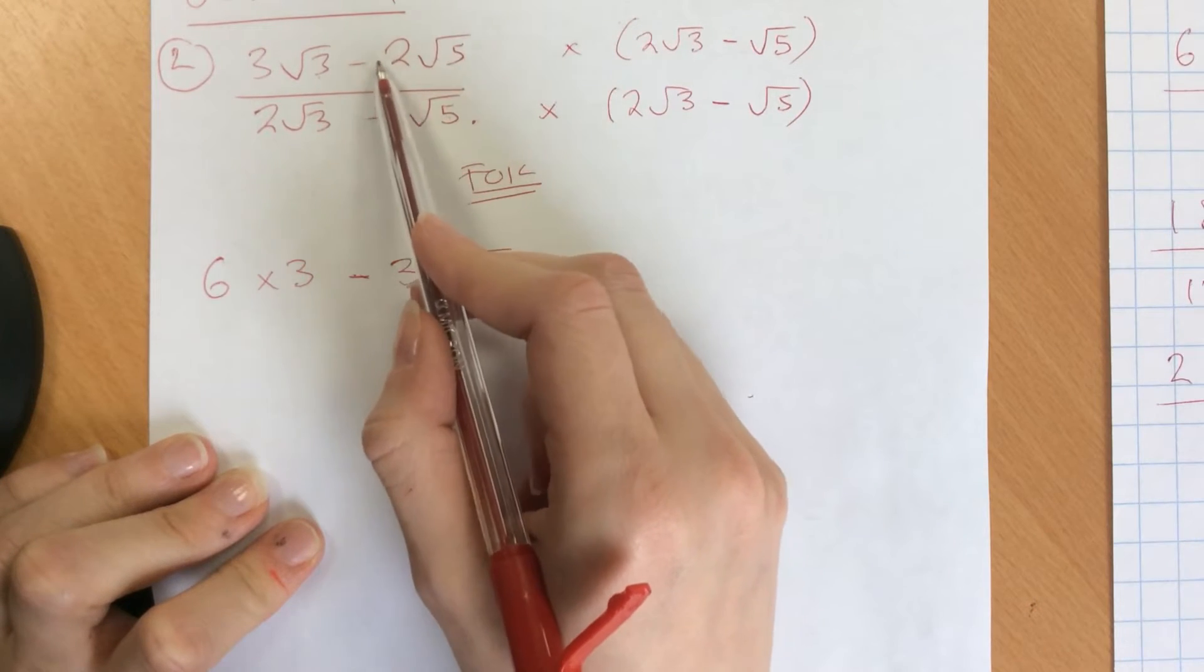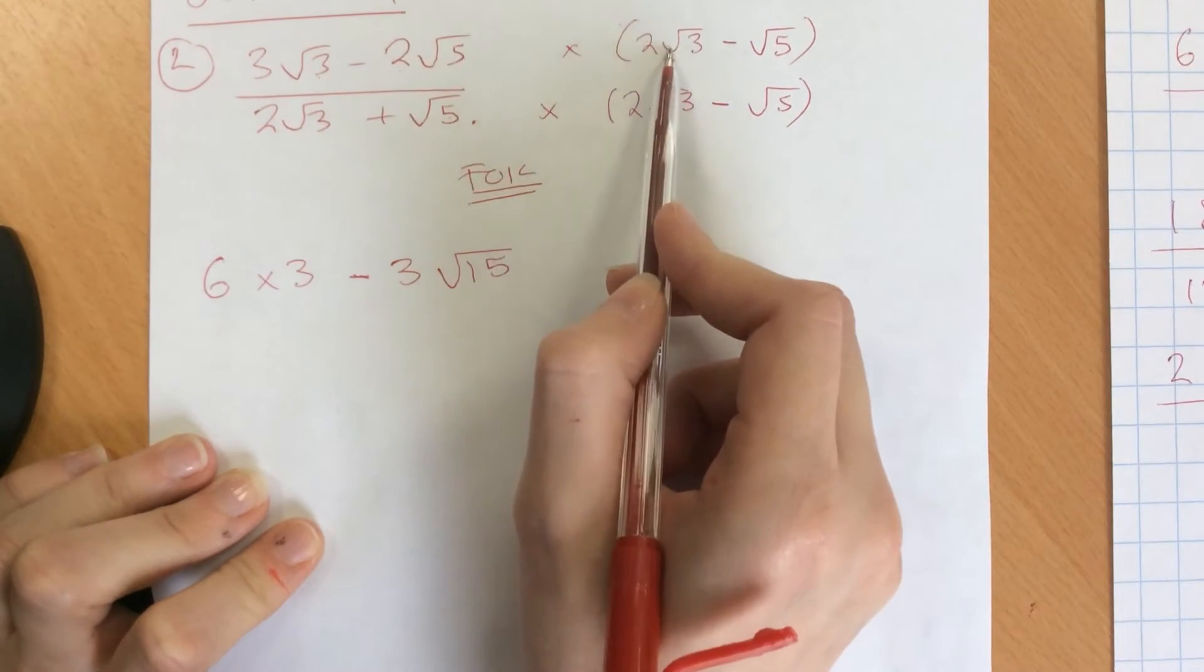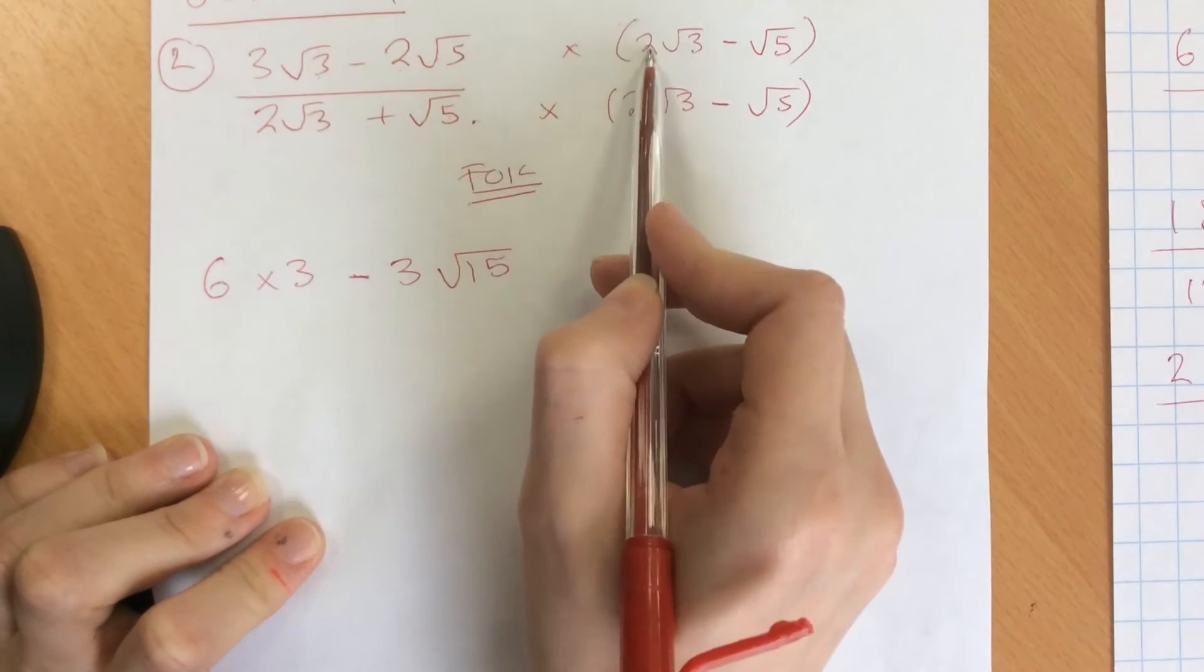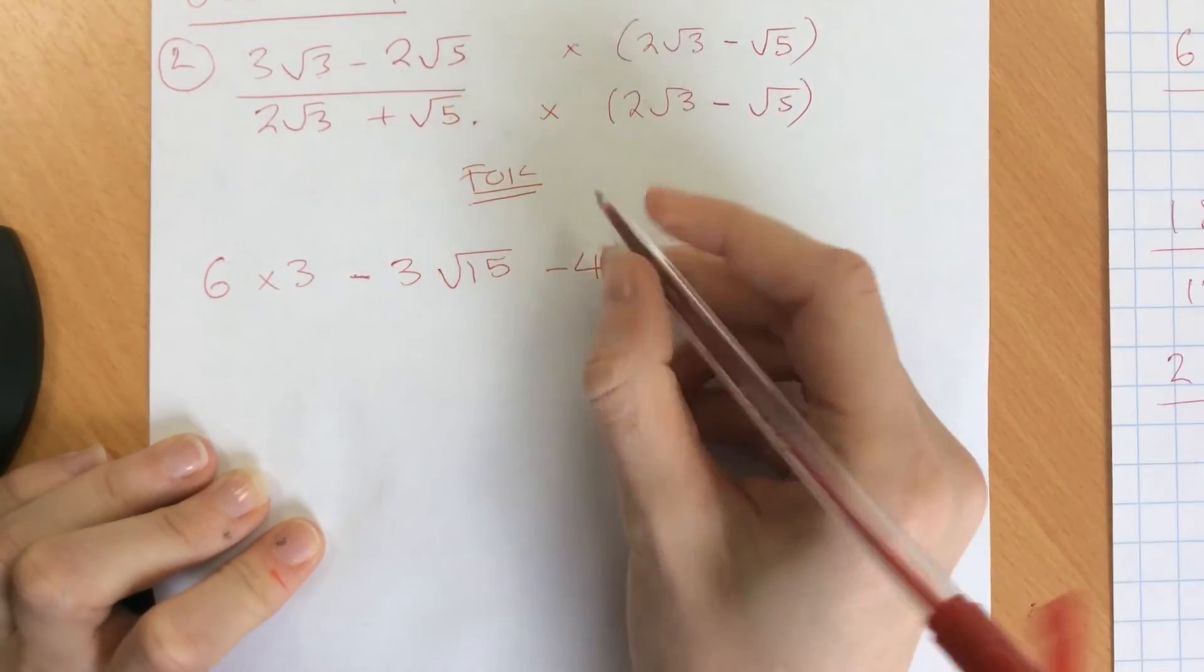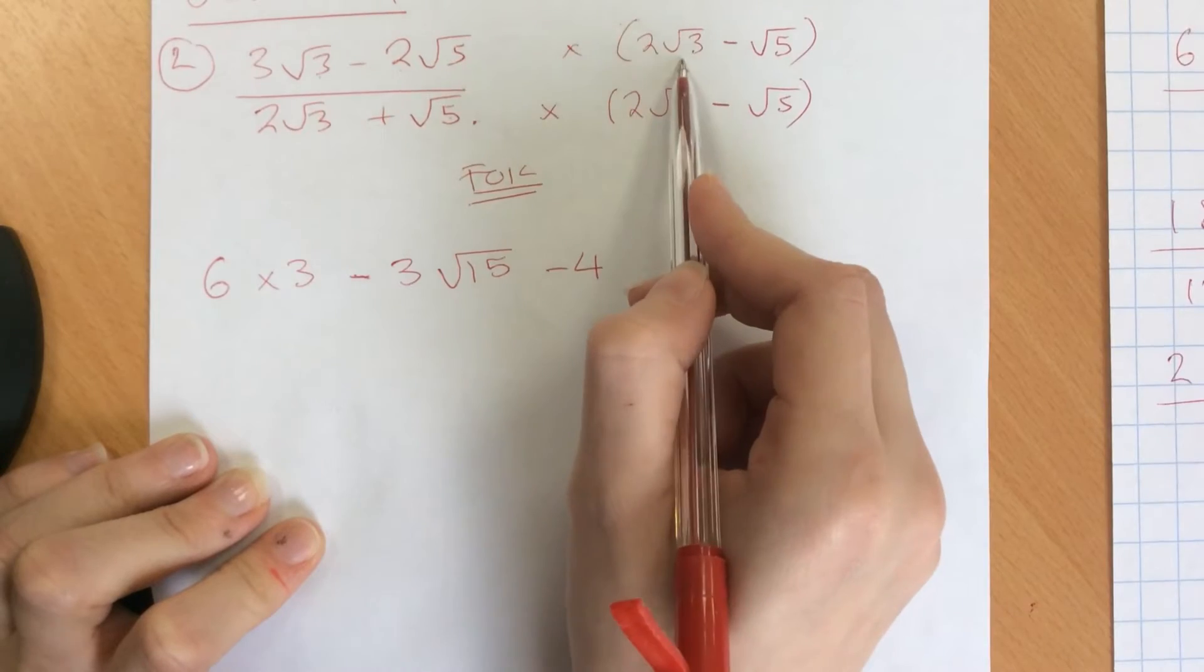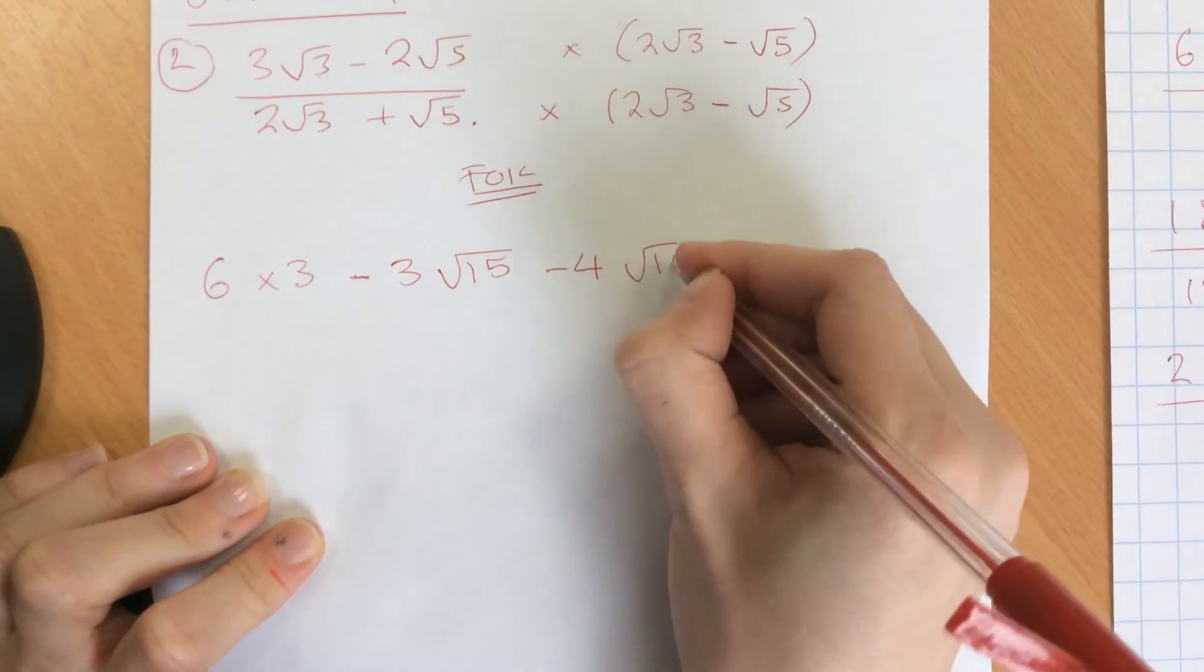Then we're going to do the inside, so we've got minus 2 root 5 times 2 root 3. So minus 2 times 2 gives you minus 4. Root 5 times root 3 gives me root 15.